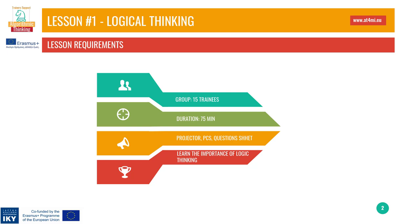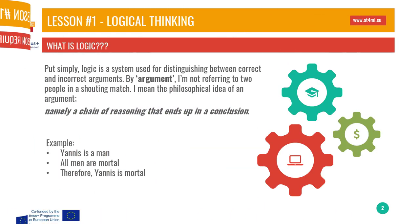The objective aim of this lesson is to teach trainees the importance of logical thinking. What is logic? Logic is a system used for distinguishing between correct and incorrect arguments. By argument, we are referring to the philosophical idea of an argument, namely a chain of reasoning that ends up in a conclusion.